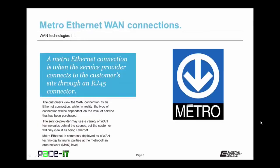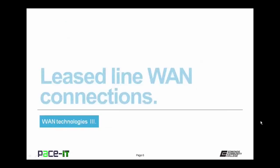A Metro Ethernet connection is when the service provider connects to the customer's site through an RJ45 connector. The customer will view that WAN connection as an Ethernet connection, while in reality the type of connection will be dependent upon the level of service purchased. The service provider may use a variety of different WAN technologies behind the scenes, but the customer will always view it as being an Ethernet connection. Metro Ethernet is commonly deployed by municipalities at the Metropolitan Area Network, or MAN level.